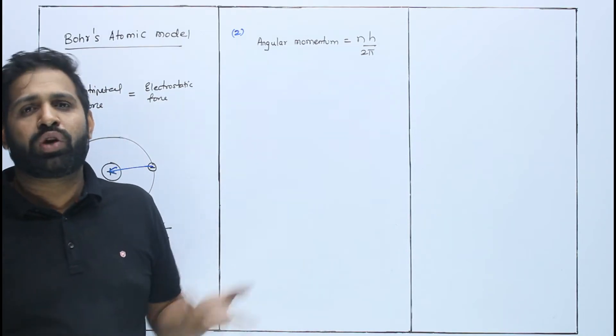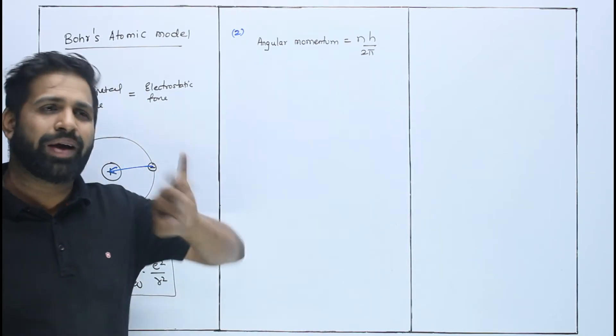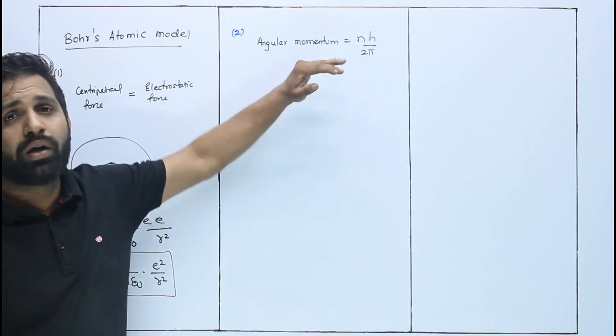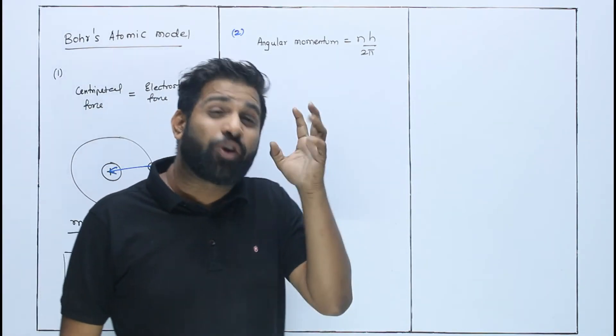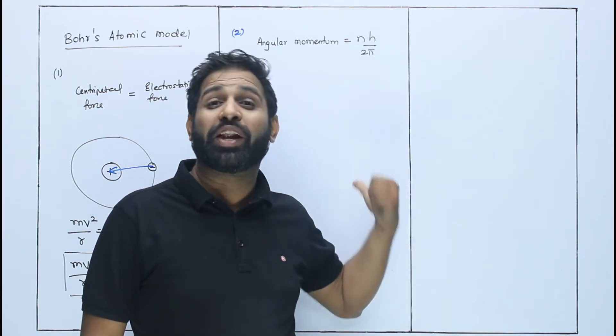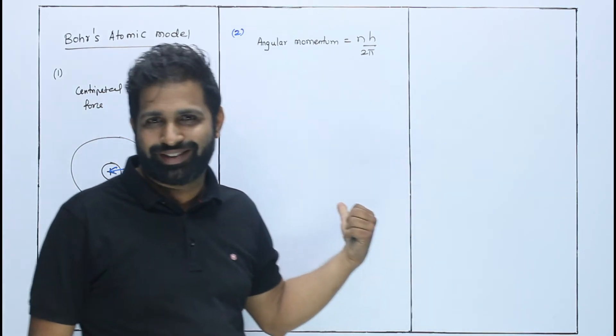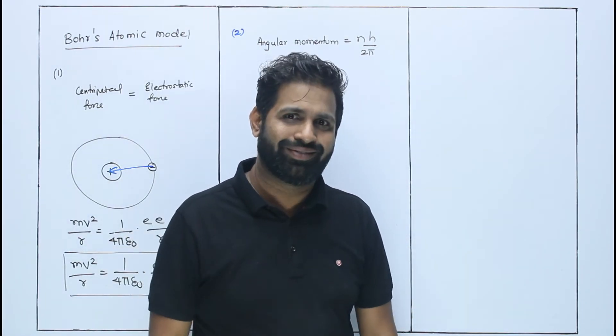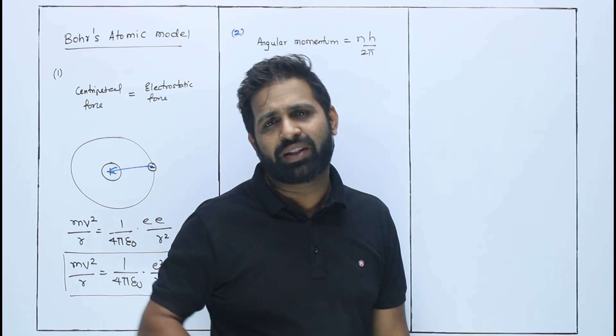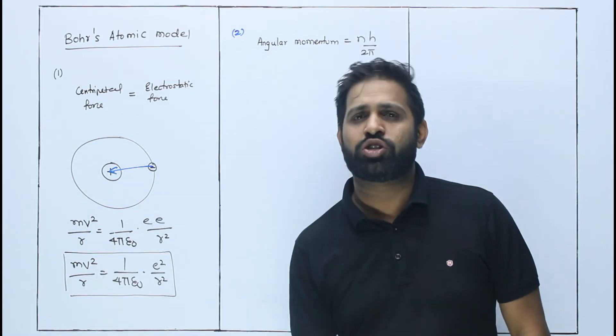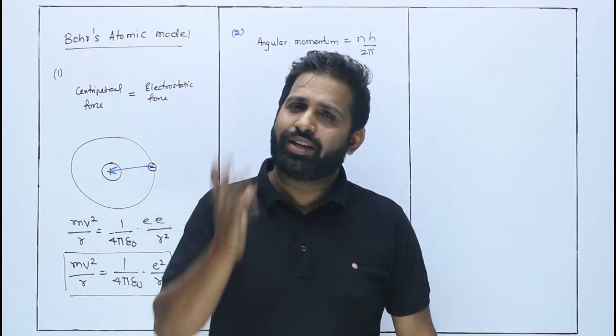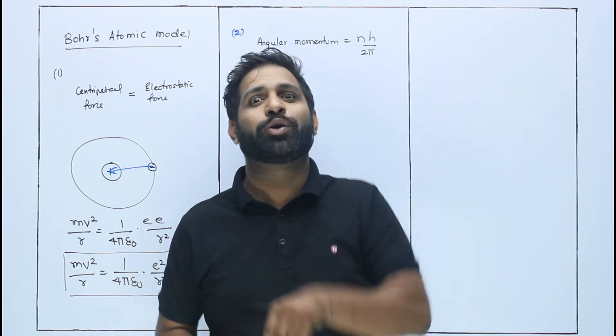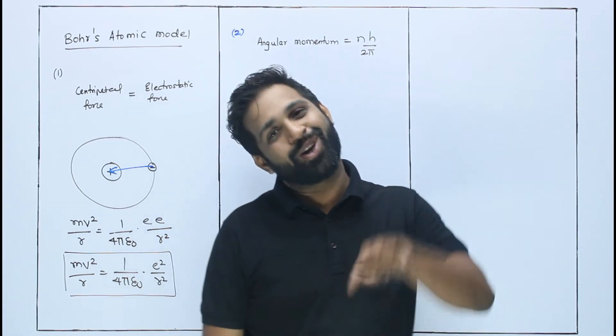If it doesn't satisfy, no doubt it will emit energy, spiral and fall into the nucleus - this was Rutherford's drawback. Bohr is trying to remove Rutherford's drawback. The drawback was that electron is accelerating and since electron is a charged body, it should emit energy. But that's not happening. Bohr says it's not happening because electron is in its own orbit. In its own orbit it won't do this, but in some other orbit it will.